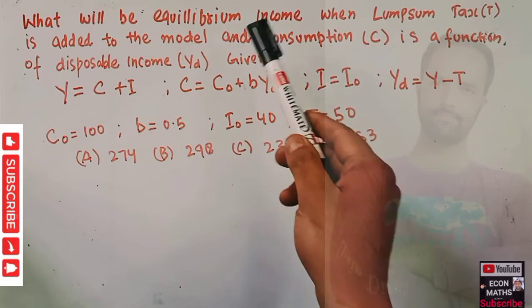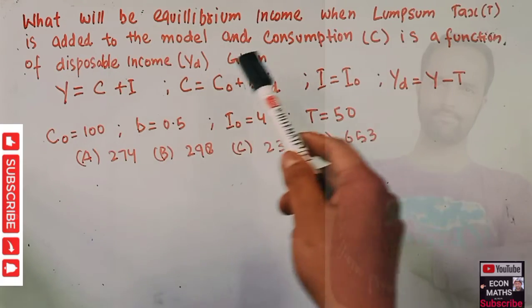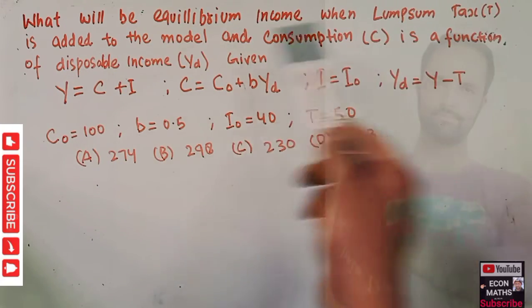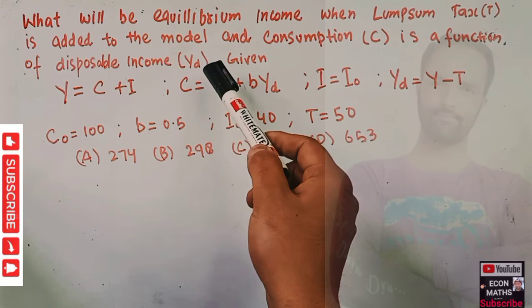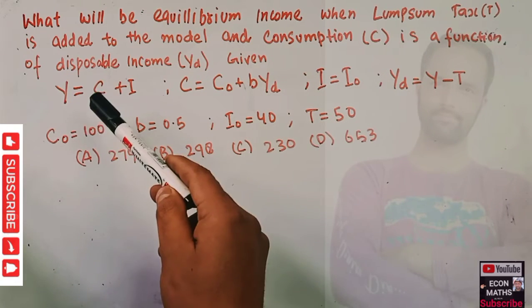Next question is: what will be equilibrium income when lump sum tax T is added to the model and consumption C is a function of disposable income? Y subscript d denotes the disposable income.